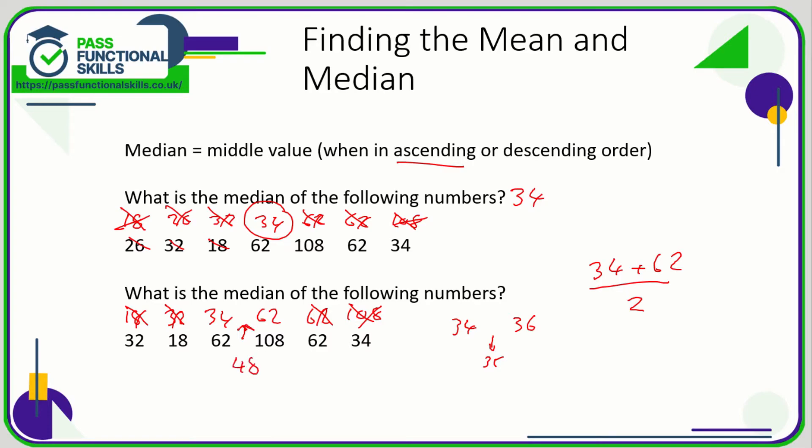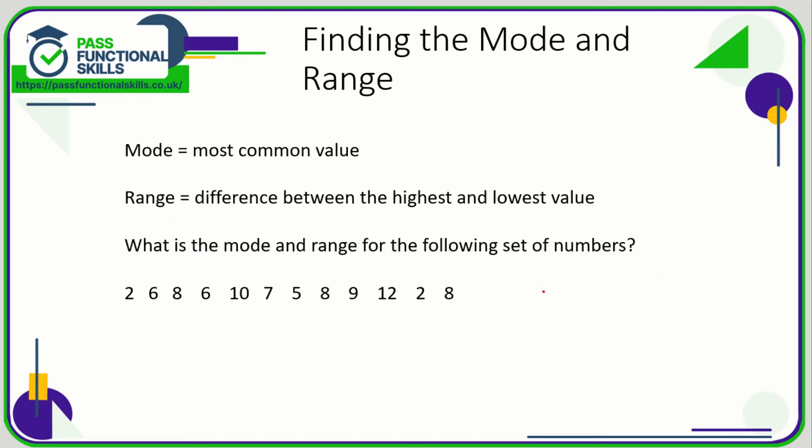Now the mode is the most frequently occurring value, or the most common value. And the range is the difference between the highest and the lowest value.